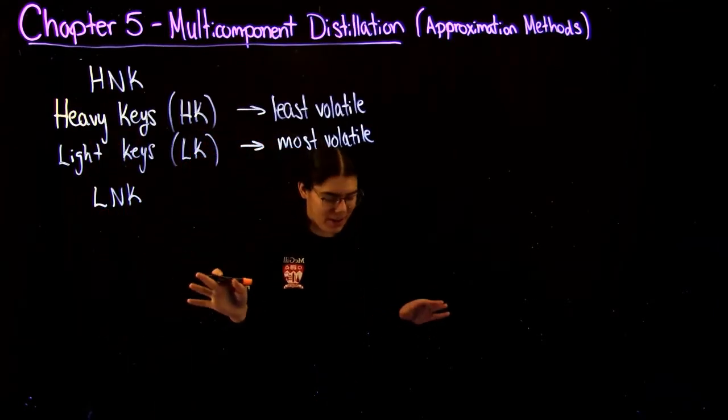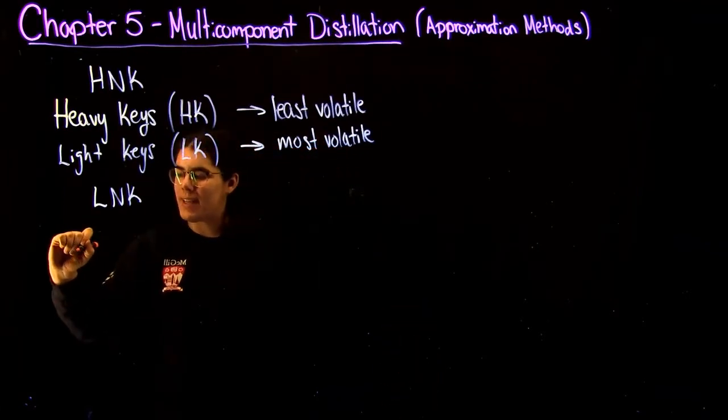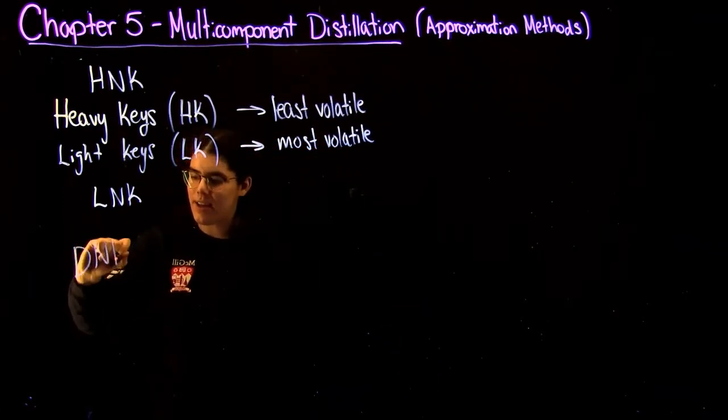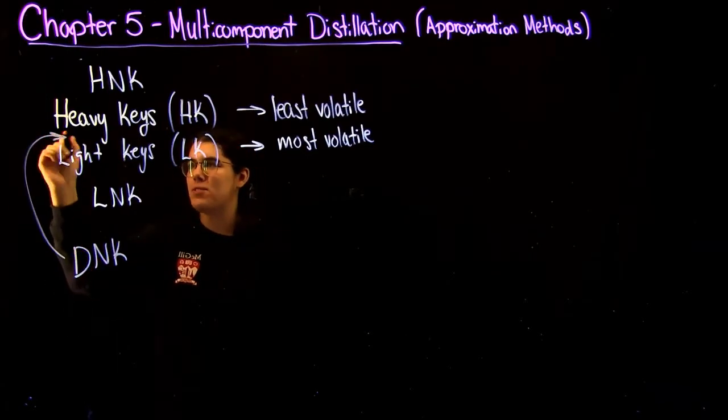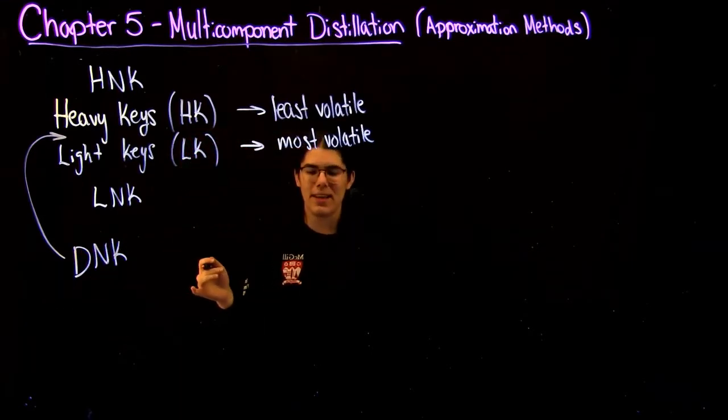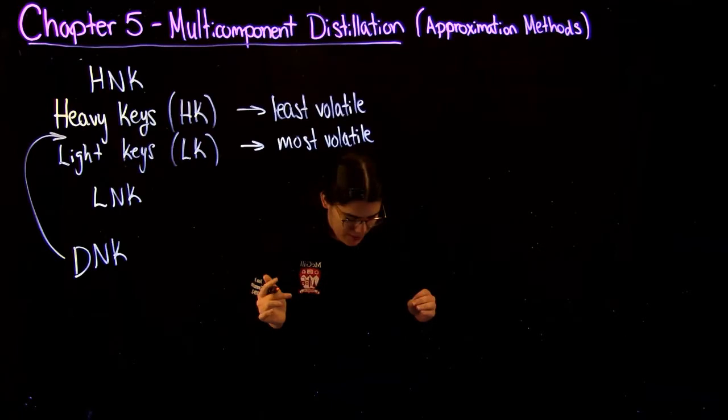Now this will become a little bit more clear when we do the example, but one final definition I want to cover is a distributed non-key. This is a component that would have a volatility that's in between the heavy key and the light key, so you're going to find it throughout your column, and you can't say too much about it.